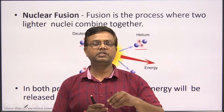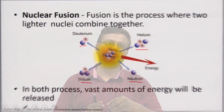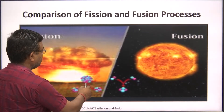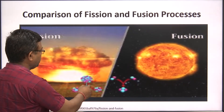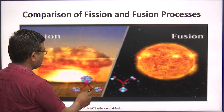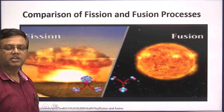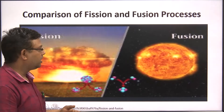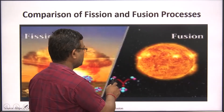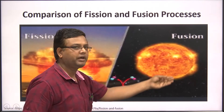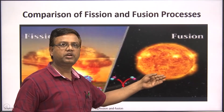This large amount of energy is what we want to use. In a comparison diagram of fission and fusion: in fission, a heavy nucleus breaks into two — the example to identify this is the atom bomb. In the second diagram, two lighter nuclei combine into one — this is what happens in the sun.